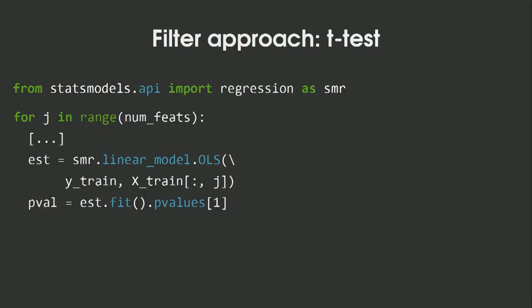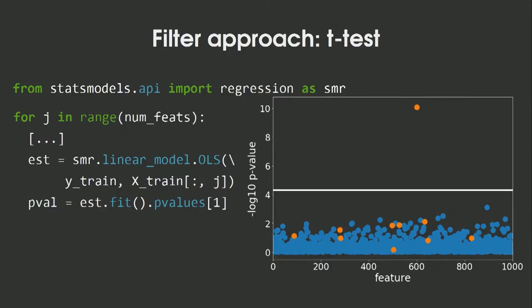I work with biologists, so they tell me: do a t-test. So I do that in Python — for each feature, I do a statistical test to know whether it is associated with my outcome. On this plot, I still have my features on the X axis, and on the Y axis I have minus log10 of the p-value. The higher the value, the smaller the p-value. There's a line drawn at the significance threshold, and you can see only one feature has been picked out. Even lowering the threshold, everything below is mixed up, and I would not recover my orange features.